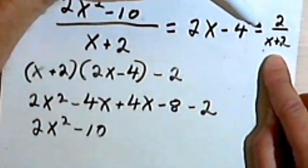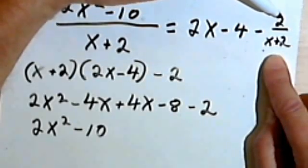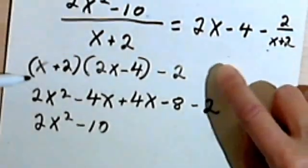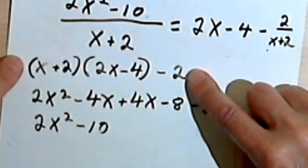And then you're going to combine that with your remainder, so whatever sign you have before the fraction and the numerator of that fraction.